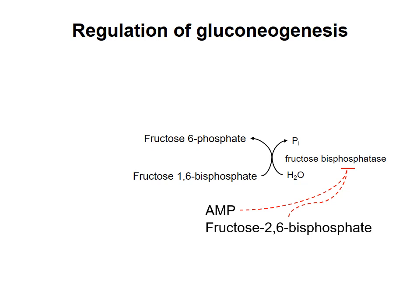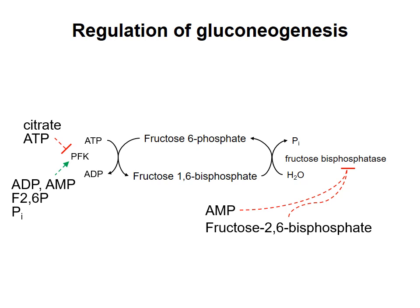We can compare the regulation of this step of gluconeogenesis with the analogous step of glycolysis that converts fructose 6-phosphate into fructose 1,6-bisphosphate. Compounds that activate the enzyme carrying out the glycolysis step will inhibit the enzyme that carries out the gluconeogenesis reaction. These enzymes will never both be turned on at the same time. If they were, that would be what biochemists call a futile cycle, where two compounds are rapidly interconverted. So anytime you have this kind of situation, only one direction will be favored at any given time.